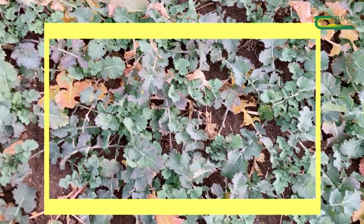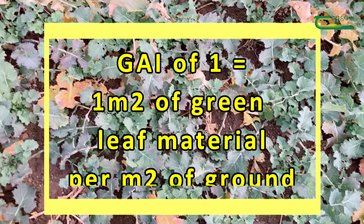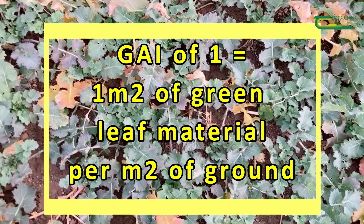What does GAI mean? GAI — Green Area Index — is the measure of leaf in a square metre. A Green Area Index of one means we have one metre squared of leaf material per metre squared of ground, and that contains about 50 kilos per hectare of nitrogen — so that's a real saving we can make.